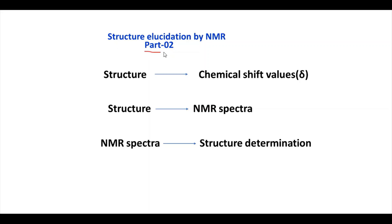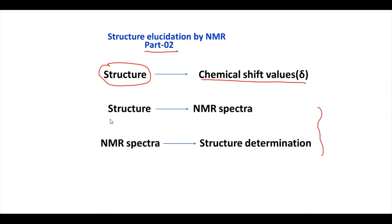Hello everyone. This is Part 2 of structure elucidation by NMR spectroscopy. In the first part, we learned how to calculate the chemical shift value of a given organic structure by remembering some base values of a given functional group and the chemical shift induced by that functional group. But in this video, we will learn how to interpret structure from the NMR spectra — NMR spectra to structure determination. Let us understand by taking some examples.